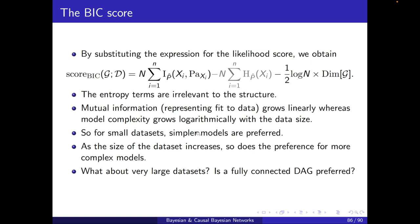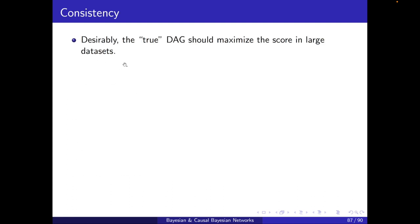So, what does this imply? Does it mean that as the data set increases, a fully connected DAG will be preferred, as in the likelihood score? Now, in order to answer this, note that, desirably, the true DAG should maximize the score in large data sets.